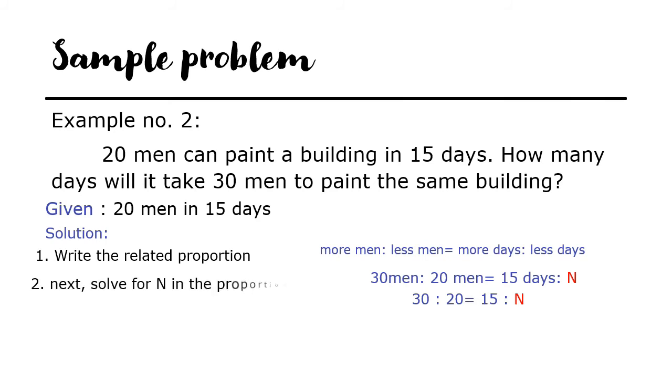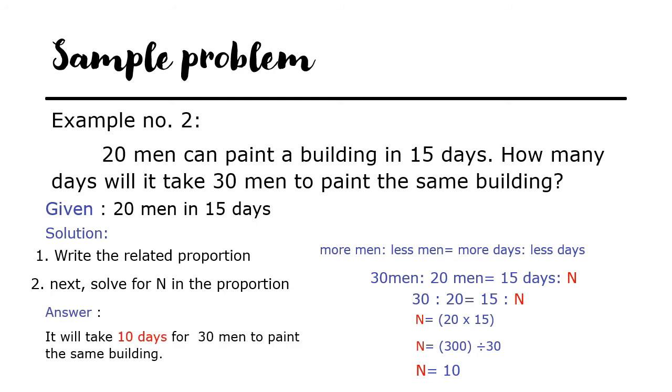Next, we will solve for N in the proportion. N equals 20 times 15, that is 300. Then divide by 30, the answer is 10. The value of N is 10, or it will take 10 days for 30 men to paint the same building.